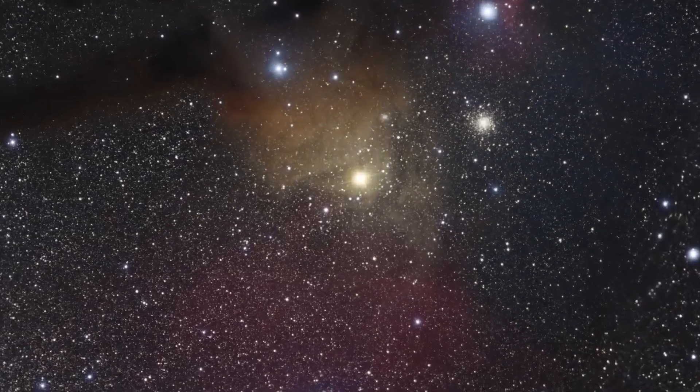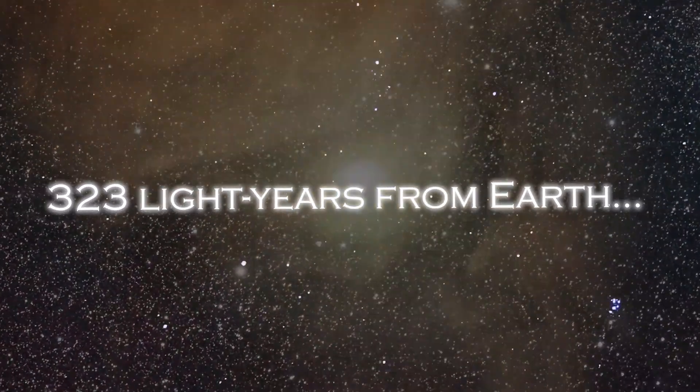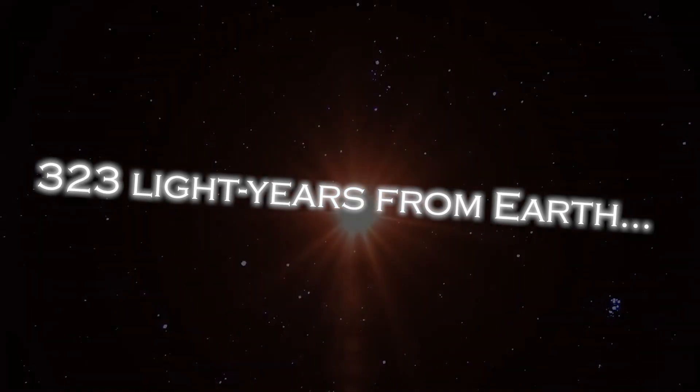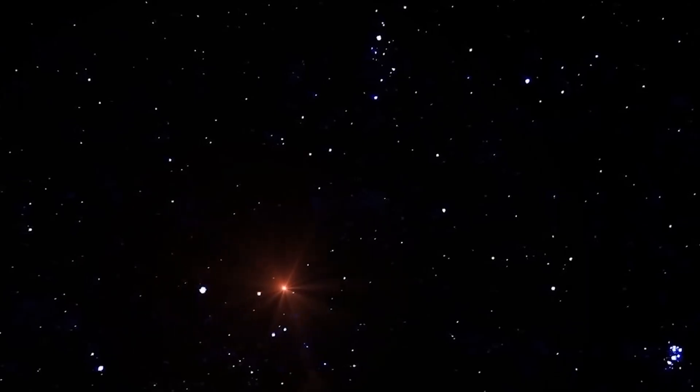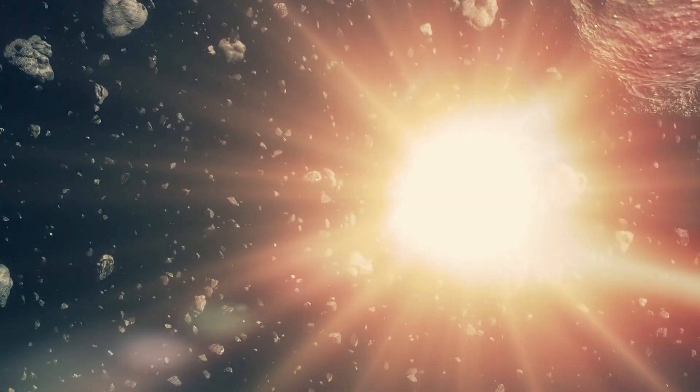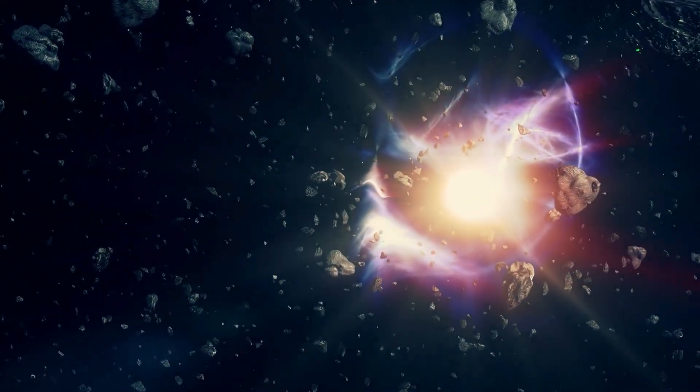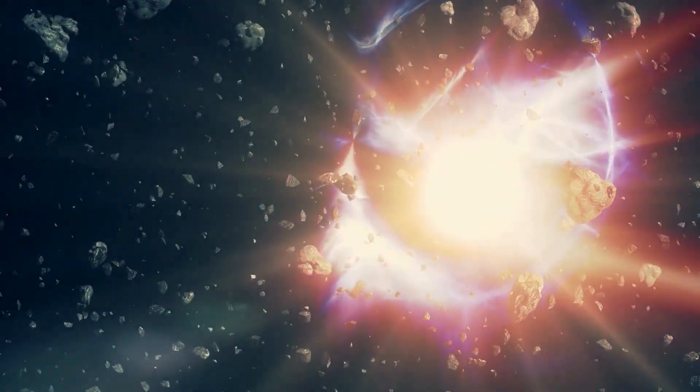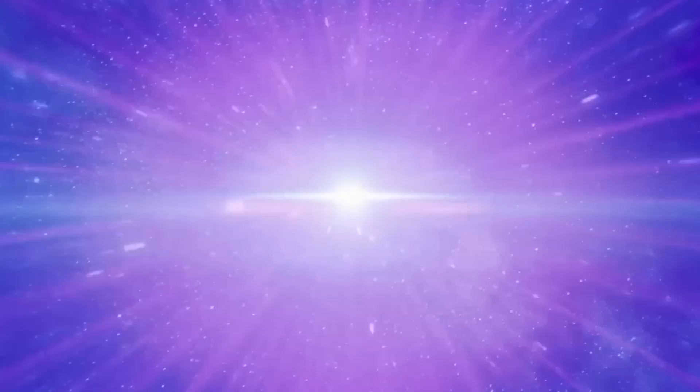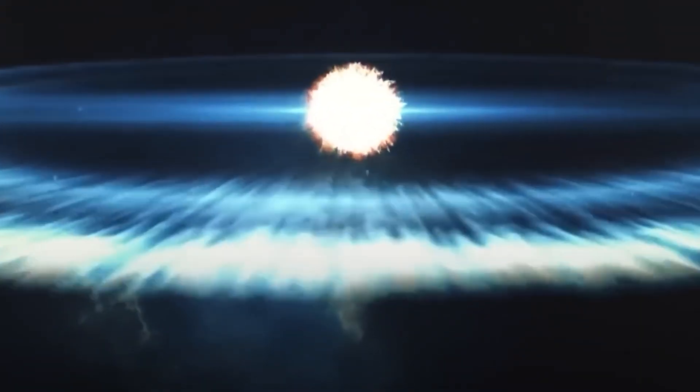Polaris is approximately 323 light-years from Earth, which means that the light we receive from this star today was actually emitted 323 years ago. This great distance means that if Polaris were to explode today, we would not be aware of it until 320 years later. Therefore, when we finally witnessed this event from Earth, more than three centuries would have elapsed since it occurred.